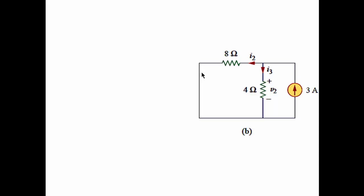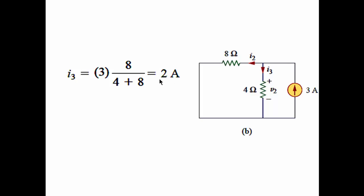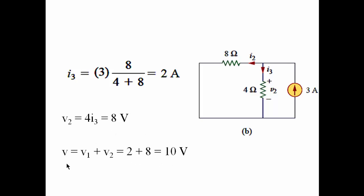Now we set the voltage source equal to 0 by replacing it with a short circuit, and we need to find the voltage V2 that results from the current source. First of all, we need to find the current that's flowing in this resistor, which is I3, using the current divider rule. And this current is 2 amperes. By multiplying 2 amperes by 4 ohms, we get the voltage V2, which is 8 volts. And finally, we obtain the voltage V by adding the two voltages. And this is the final answer.